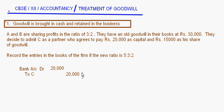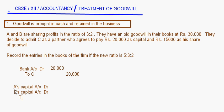There is an old goodwill in the books at 30,000 rupees. This old goodwill has to be written off among the old partners in their own profit sharing ratio. So the next entry will be: A's capital account debit, B's capital account debit, to goodwill account. This writes off the old goodwill.